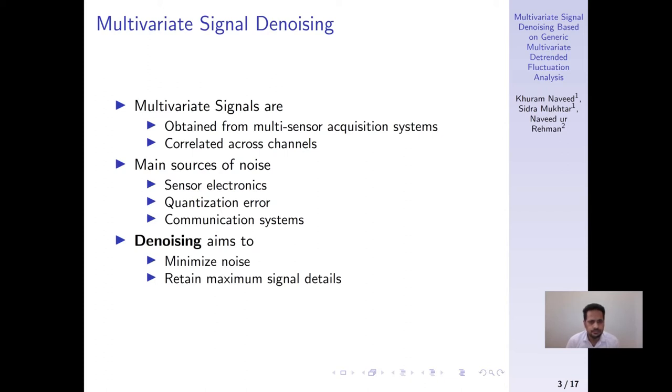The data acquisition system is known to be the biggest contributor of noise in the required signals, where significant noise is attributed to sensor electronics and various types of post-processing errors, for instance, quantization error. In some cases, communication systems are also known to introduce noise.